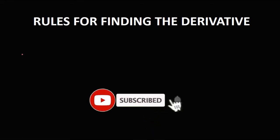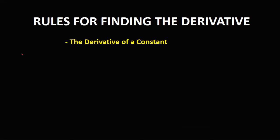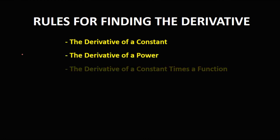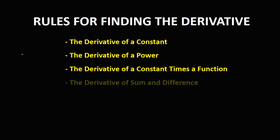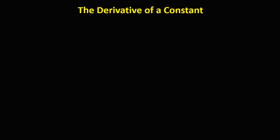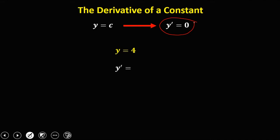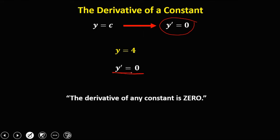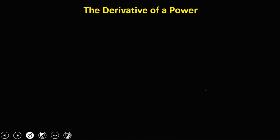Let's cover the rules for finding the derivative: the derivative of a constant, the derivative of a power, the derivative of a constant times a function, the derivative of sum and difference, the derivative of a product, and the derivative of a quotient. For the derivative of a constant, y equals c, the derivative of a constant is zero. So if y equals 4, then y prime equals zero.